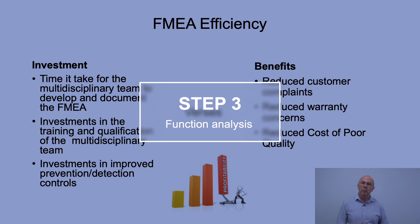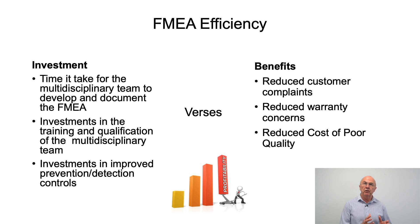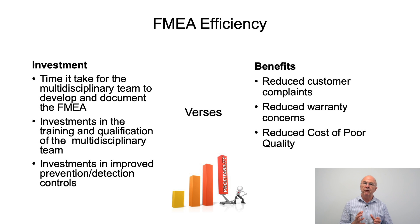To recap on what we covered in step one and step two, there is a lot of focus in the new FMEA handbook about FMEA efficiency. This looks at the investment that management have to commit to in developing the FMEA and implementing prevention or detection controls — which might mean, for example, investing in error proofing devices — versus the potential benefits we can gain. If we do FMEA correctly we should get reduced customer complaints, reduced warranty concerns, and a reduction in the cost of poor quality.